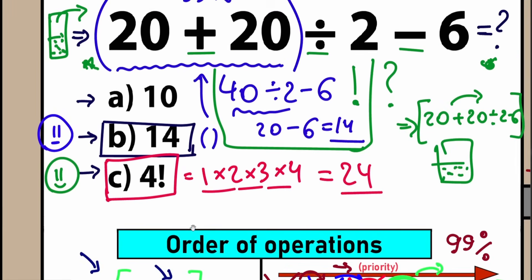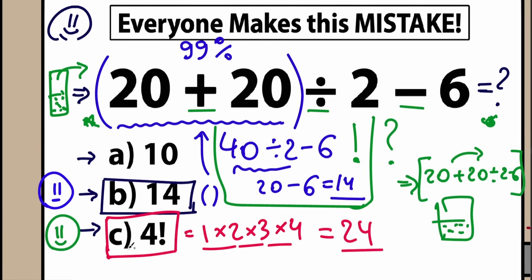The correct answer is 24. In our question the correct answer is option C — 4 factorial. If you chose 14, you need to review basic math. Remember: 14 is correct only with parentheses, because parentheses have the highest priority and force addition before division. Without parentheses, the correct answer is 24: division first, then addition, then subtraction.